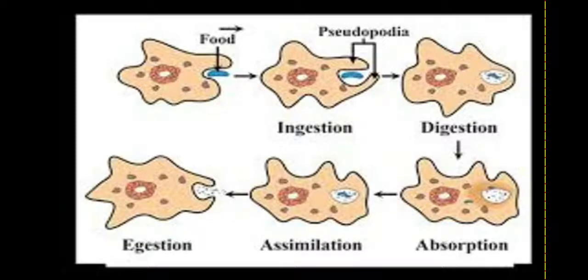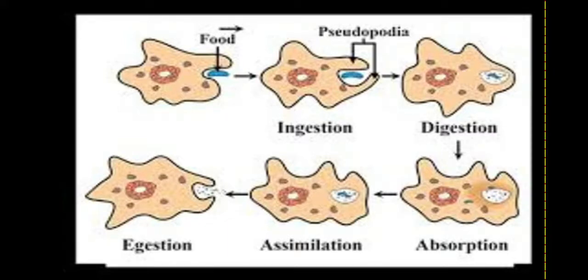The difference between digestion in human beings and amoeba is: in human beings, digestion takes place across a number of organs — buccal cavity, food pipe, stomach, small intestine, and large intestine. But in amoeba, all the processes — ingestion, digestion, absorption, assimilation, and egestion — take place within a single cell. That is the key difference between digestion in amoeba and in human beings.